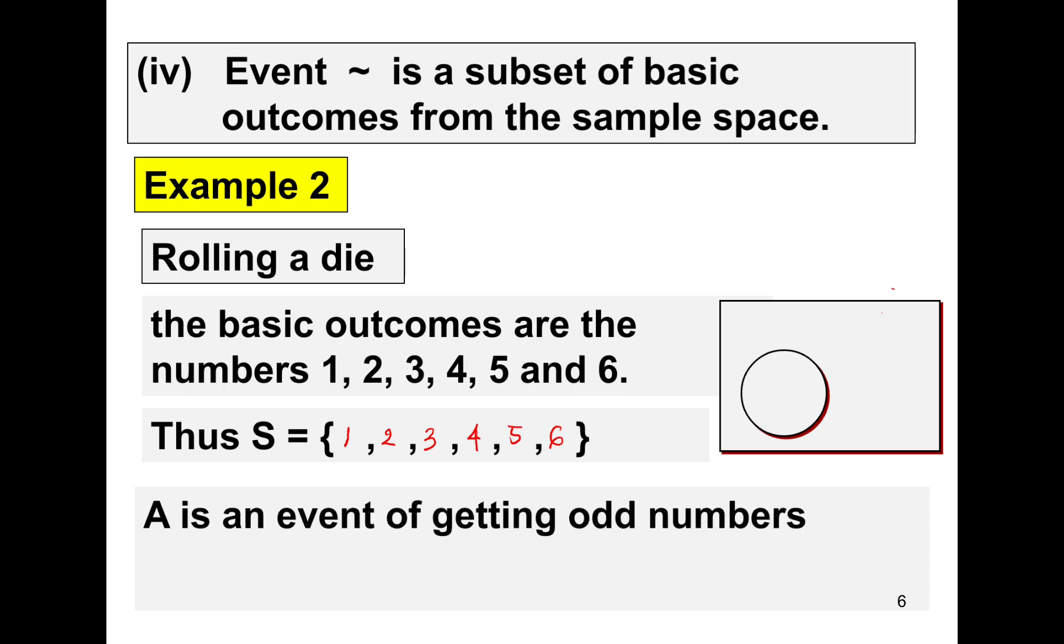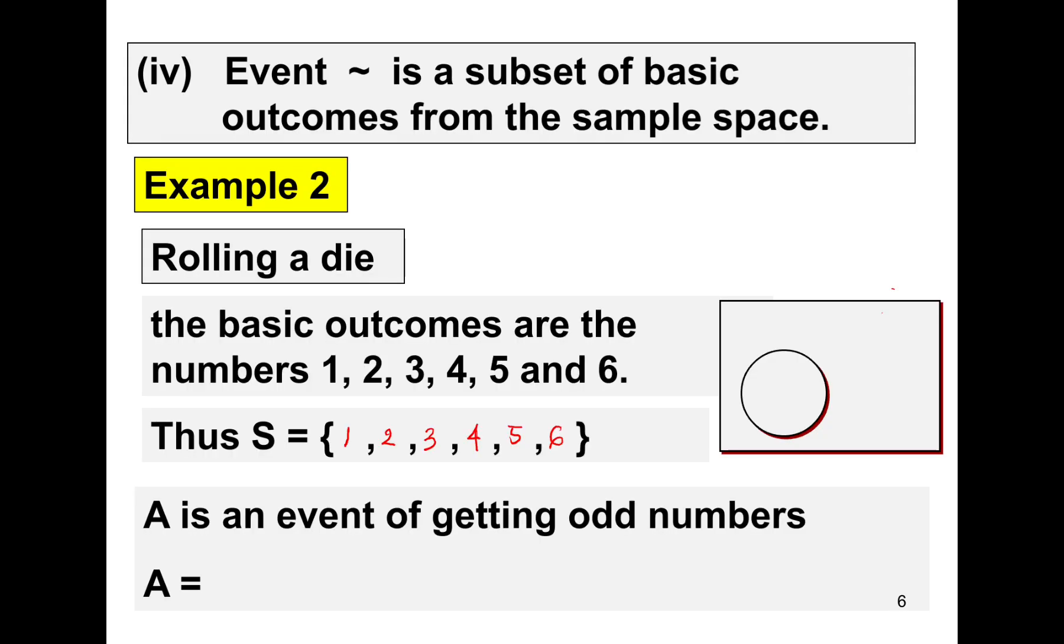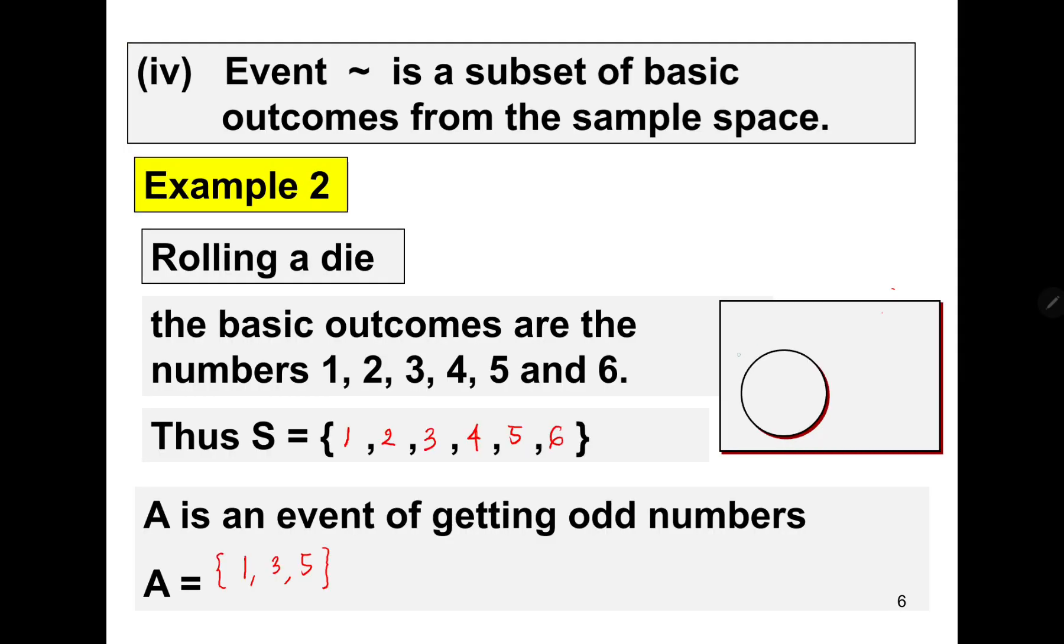So let's say A is an event of getting the odd numbers. So the element of A must be 1, 3, and 5. We may also represent this idea in Venn diagram. So let's say we have A here. So the element of A are 1, 3, and 5. So outside of A must be 2, 4, and 6.